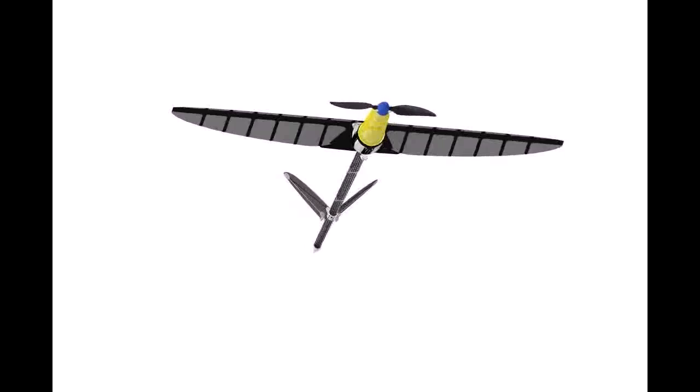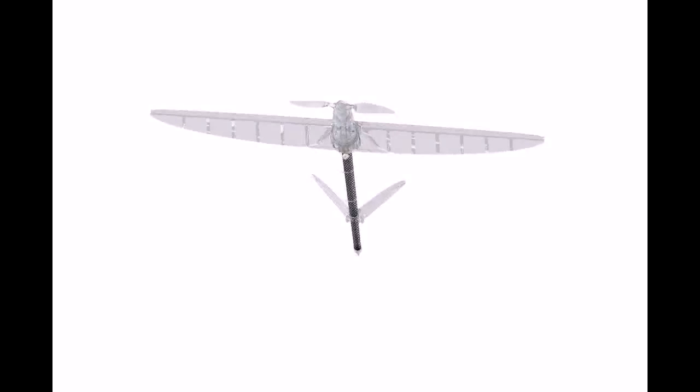To escape the water, the robot uses a powerful water jet thruster which forms the keel of the robot.